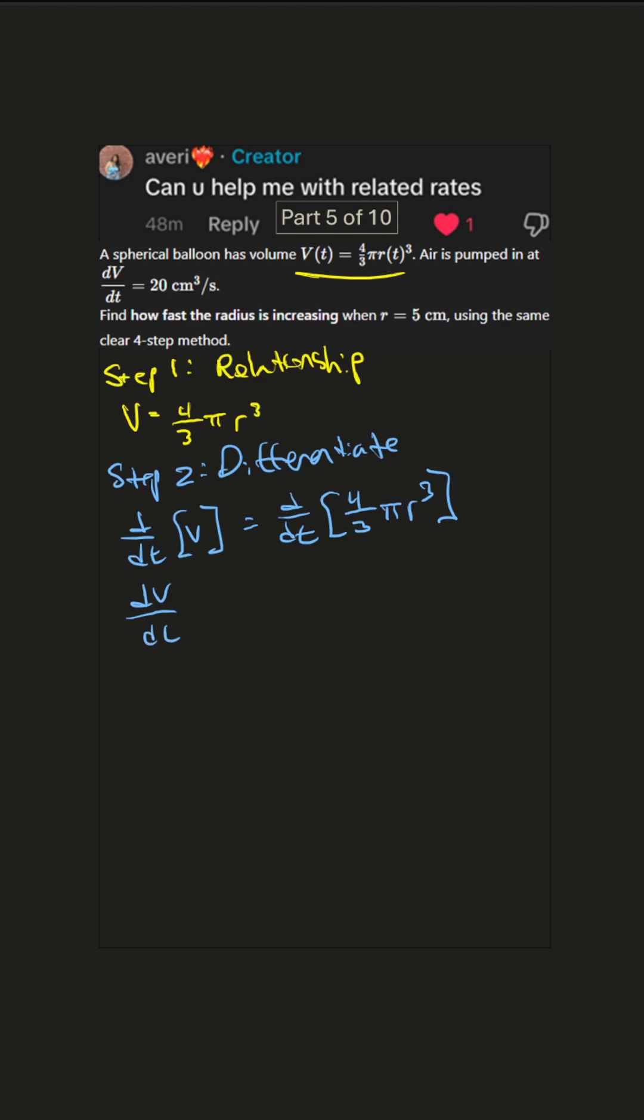Left side is just dV dt. The right side, we use the power rule, bring that 3 down, and we'll get 4 pi r squared. But don't forget to use the chain rule since we're taking the derivative with respect to time and the variable is r.